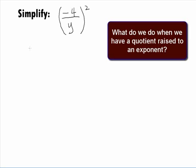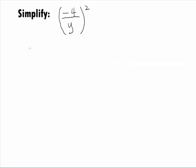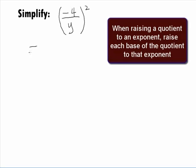So, what do we do when we have a quotient raised to the same exponent? We raise each base in the numerator and denominator to that same exponent.